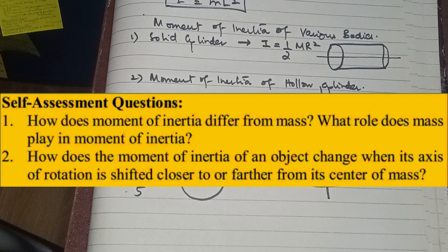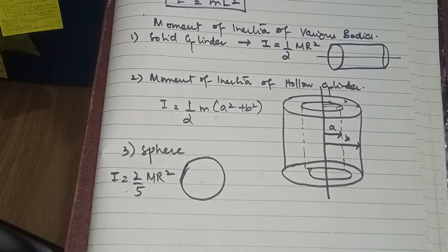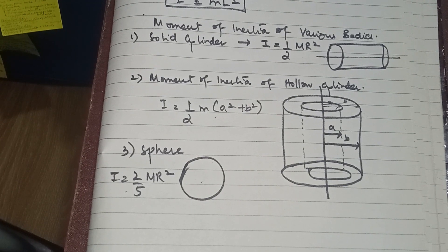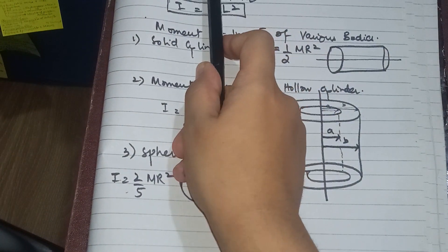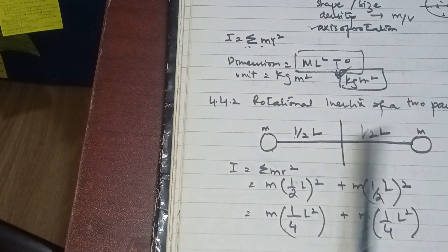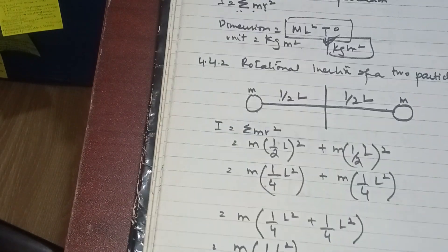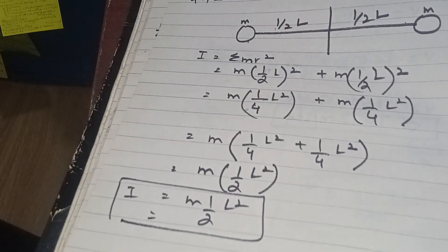The role of mass in moment of inertia: it depends on how much mass is present and how that mass is distributed relative to the axis of rotation. Objects with mass distributed far from the axis of rotation have a greater moment of inertia than those with mass distributed nearer to the axis of rotation.